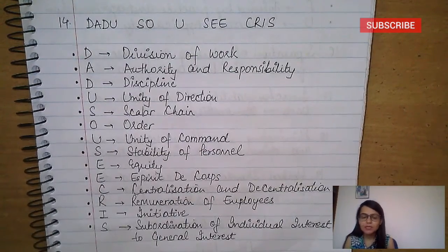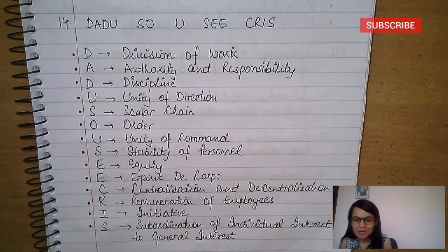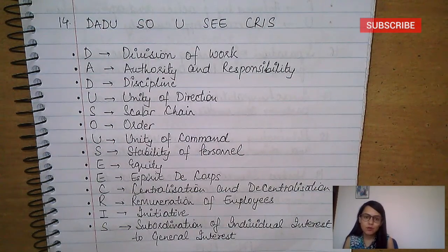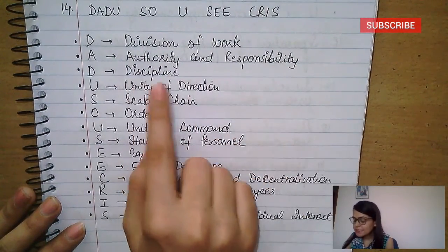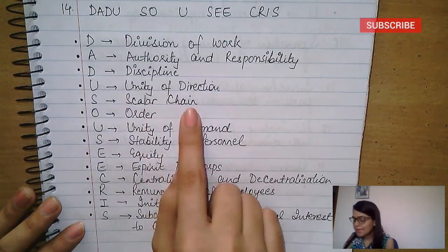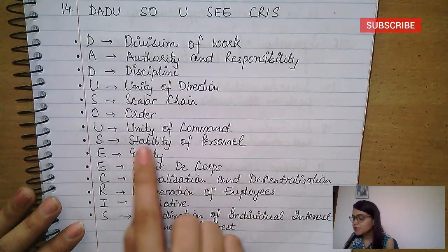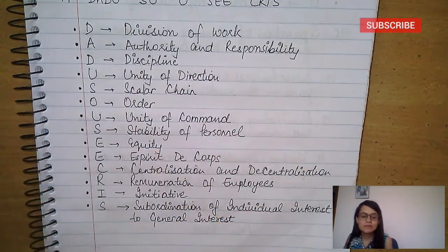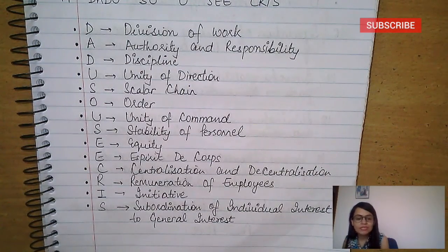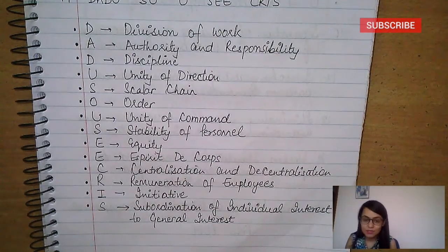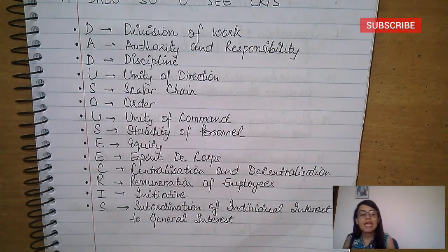Henry Fayol's 14 principles of general management — the mnemonic is DAADU SO YOU SEE CHRIS: Division of work, Authority and responsibility, Discipline, Unity of direction, Scalar chain, Order, Unity of command, You — stability of personnel, Centralization and decentralization, Equity, Remuneration of employees, Initiative, Subordination of individual interest to general interest. These are not in any fixed order; you can remember them any way.